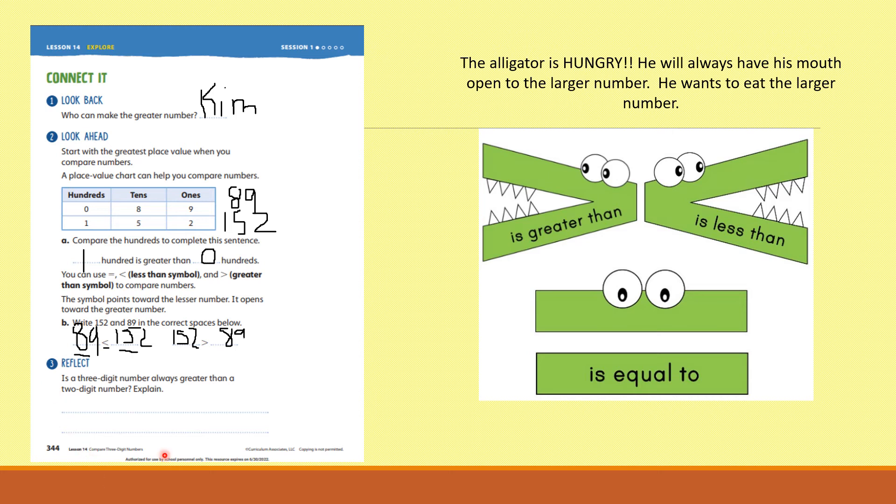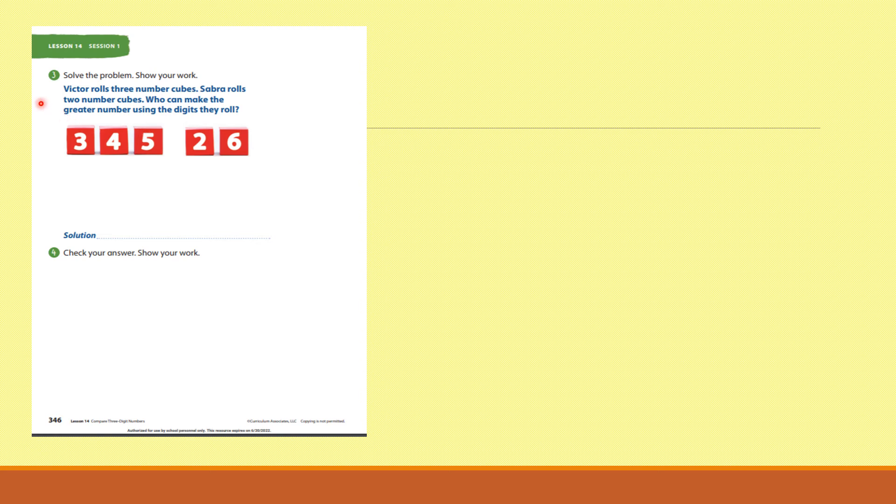Alright, let's go to the next page. Solve the problem, show your work. Victor rolls three number cubes. Sabra rolls two number cubes. Who can make the greater number using the digits that they roll? Well, let's look at this. Victor rolls a three, a four, and a five. Well, let's make the greatest number out of that.